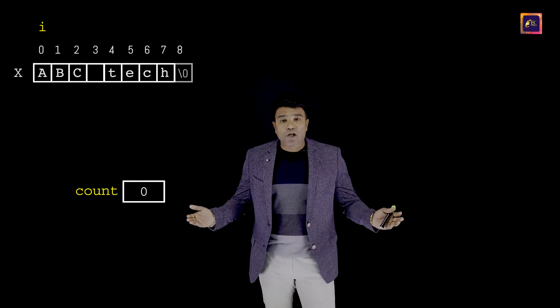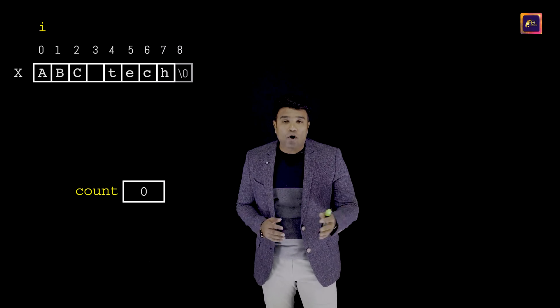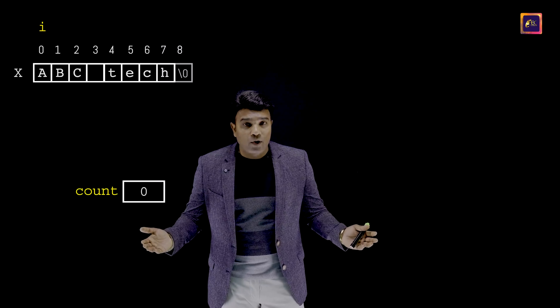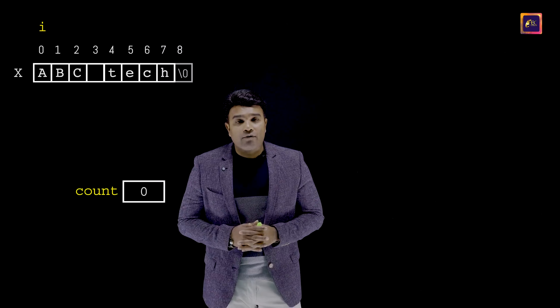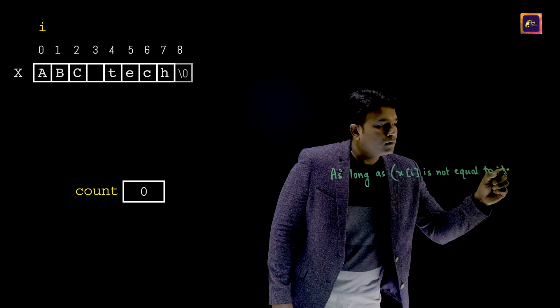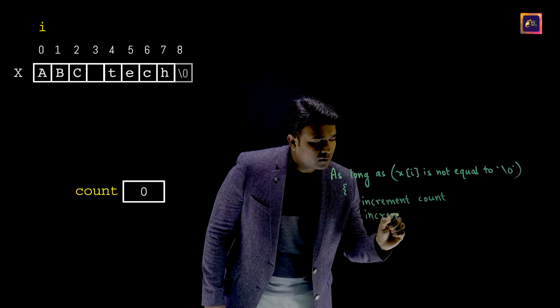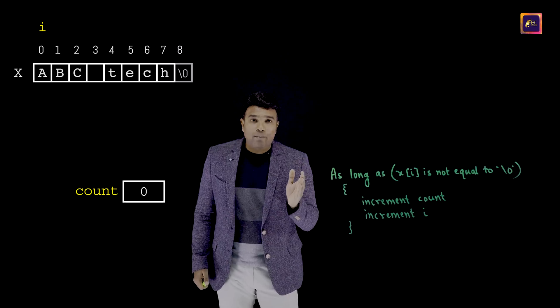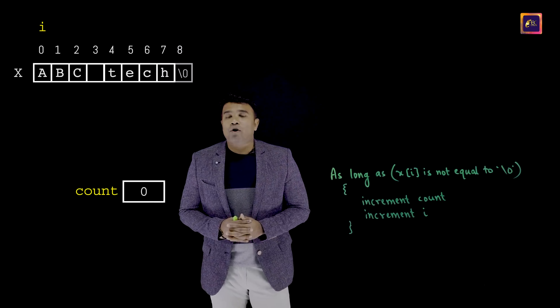All I need to do is verify the value of x[i] each time. As long as x[i] is not equal to the null character, I keep incrementing count and incrementing i. I'm going to write this in the form of a pseudocode now.